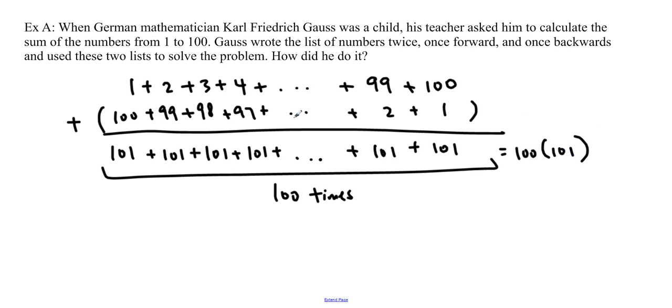So this ends up being 100 times 101. Of course, this isn't the sum of all the numbers. This is actually 2 times the sum of all the numbers. So in order to get the sum of the numbers from 1 to 100, it's actually going to be 100 times 101 divided by 2, which is 5050. So the sum of all the numbers from 1 to 100 is 5050. You could type into your calculator and go 1 plus 2 plus 3, but this is a much nicer way to do it.